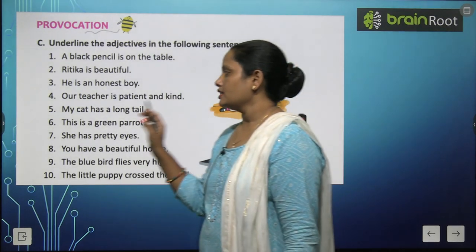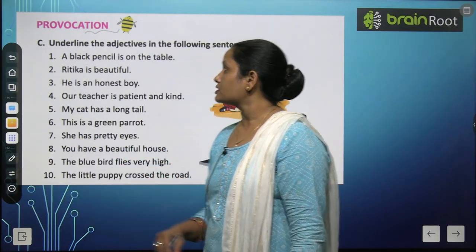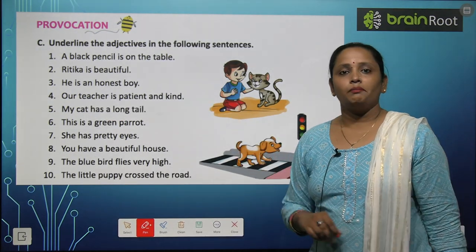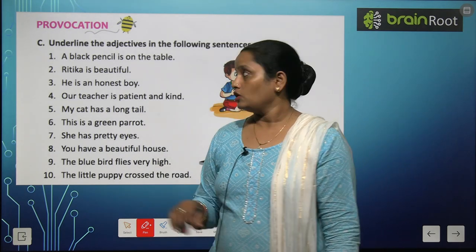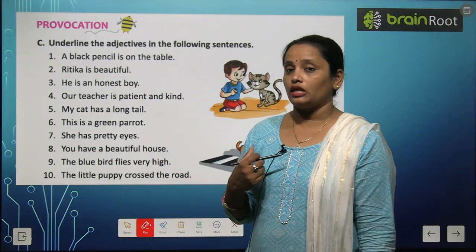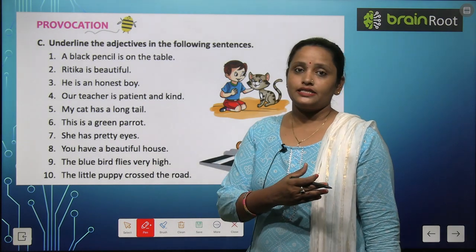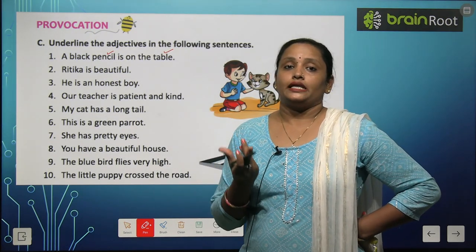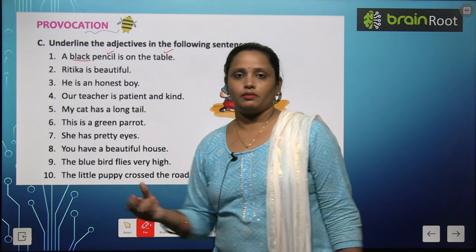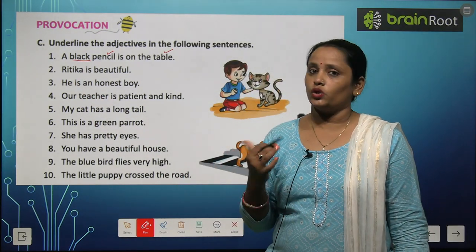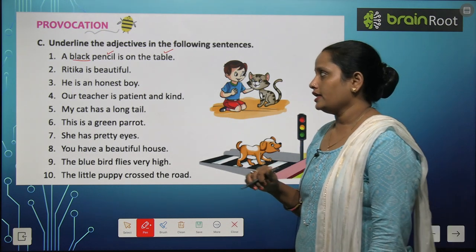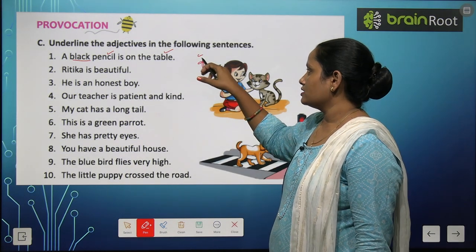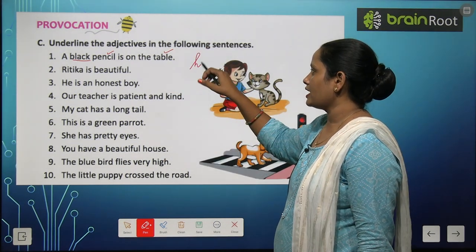Next, exercise C. Underline the adjectives in the following sentences. Yahan pe adjectives hai, inhein underline karna hai. The black pencil is on the table. Toh sabse pehle naming words ko dhunda — pencil aur table. Ab maine pencil se puchha: pencil kaisa hai? Black. Toh maine black underline kar diya. Ab maine puchha: table kaisa hai? No reply. Toh reply aana chahiye — hume puchhna hai kaisa hai wo cheez, how the thing is.